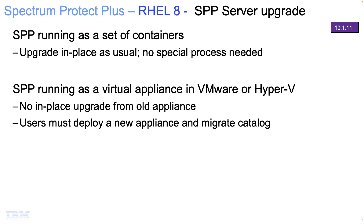There are some additional consequences as far as how the upgrade or migration goes for this switch to Red Hat Enterprise Linux 8. SPP or Spectrum Protect Plus runs as a set of containers, and if you're running in that environment, this does not affect you — you're going to just upgrade in place as you usually do, and there's no special process needed. But if you're running the virtual appliance that used to be running CentOS 7, we're not able to provide an in-place upgrade from the old appliance.